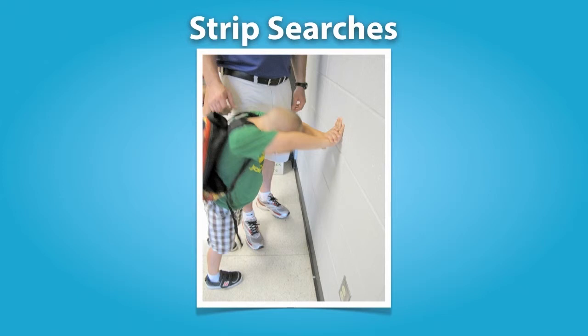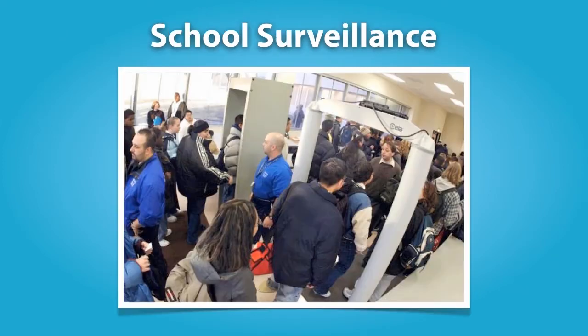Let's move to the second context where student privacy rights are most often implicated: surveillance. In light of the 1999 shooting at Columbine High School in Colorado, and more recently the shooting at Sandy Hook Elementary School in Connecticut, schools have adopted stricter safety measures, including installation of metal detectors and surveillance cameras. These measures have all withstood constitutional challenges when school officials reasonably believe they are necessary for school safety. Several school districts have recently initiated programs requiring students to wear RFID-enabled identity tags while at school, and there is current litigation pending seeking to invalidate such a rule in Texas on the grounds, among other things, that the requirement constitutes an invasion of the student's privacy.